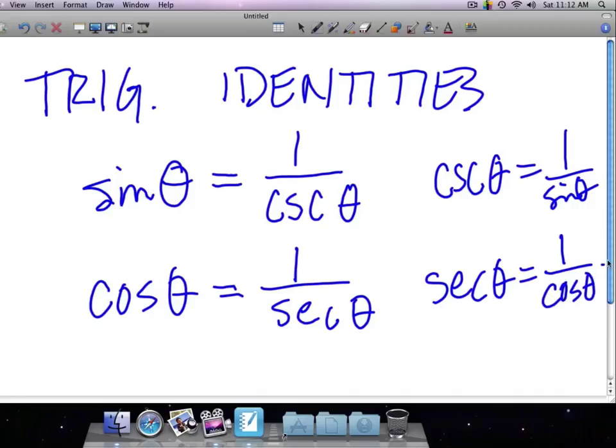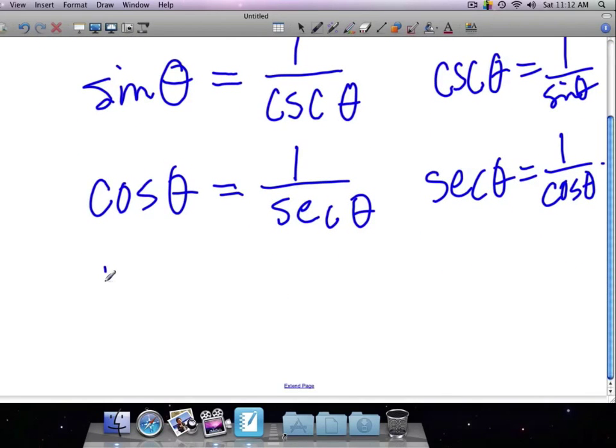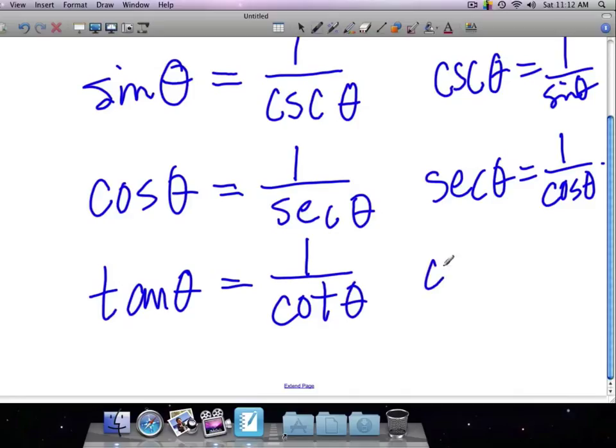Now, additionally, we have this guy. Tangent of an angle is 1 over the cotangent of an angle. And of course, that means that cotangent of an angle is equivalent to 1 over the tangent of that same angle.